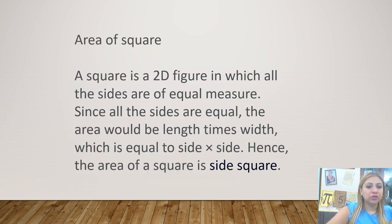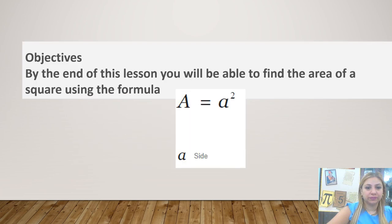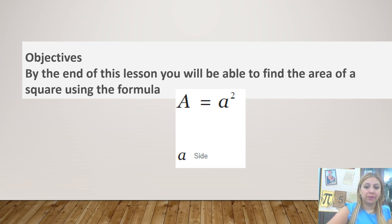We will also learn about area of a square. A square is a 2D figure in which all the sides are of equal measure. Since all the sides are equal, the area would be length times width, which is equal to side times side — the area of a square is side squared. By the end of this lesson, you will be able to find the area of a square using the formula: area equals side squared.